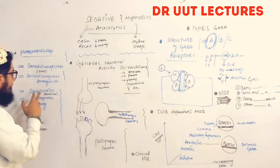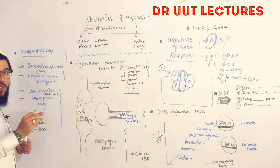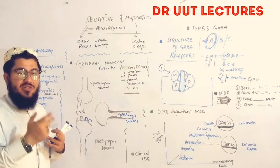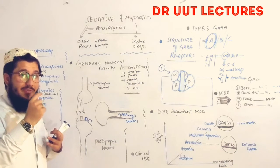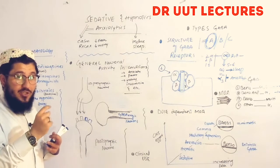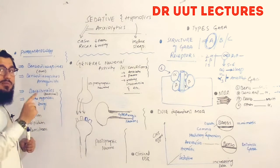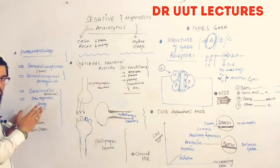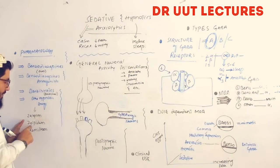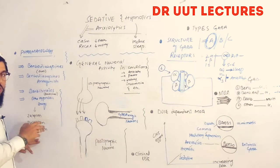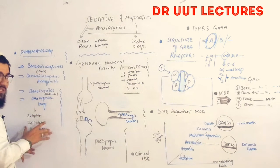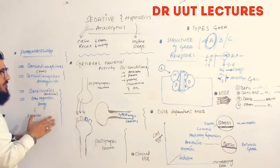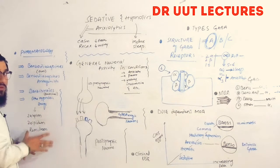Barbiturates include phenobarbital, secobarbital, pentobarbital, and others. The word 'barbital' is a repetitive pronunciation that helps you remember drugs in this class. Other hypnotic drugs — sometimes called miscellaneous — include zaleplon, zolpidem, and ramelteon. You need to remember these drug names separately.